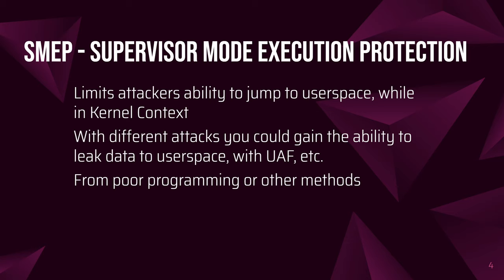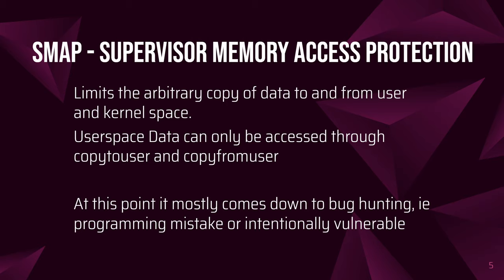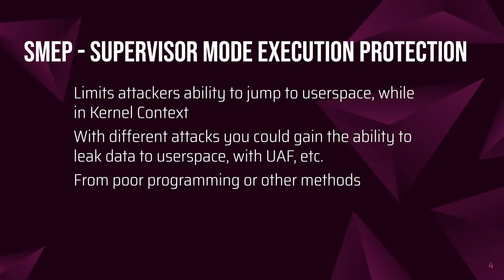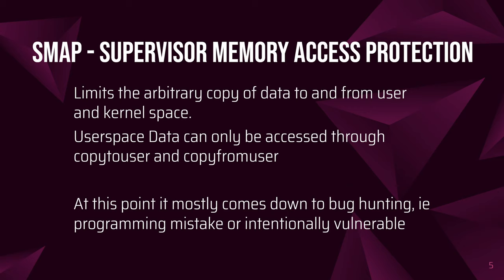With different attacks you could still gain execution, and there are different ways to bypass SMEP. The other protection is SMAP — Supervisor Memory Access Protection. If you're not allowed to execute userspace code but only SMEP is present, you'd still be able to access data from there. Maybe you have the ability to modify RSP and set up a ROP chain in userspace. SMAP limits your ability to access that data without going through specific functions: copy_to_user and copy_from_user. Those are the only safe ways to access userspace data without interfering with kernel protections.